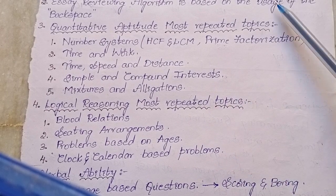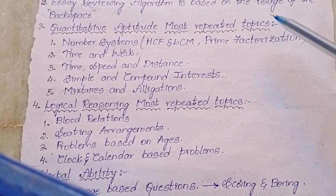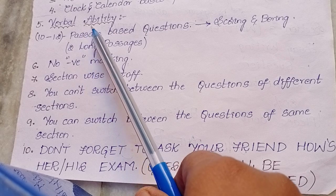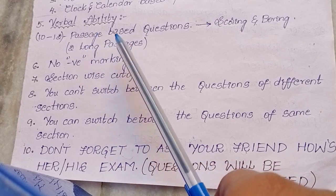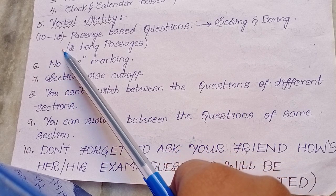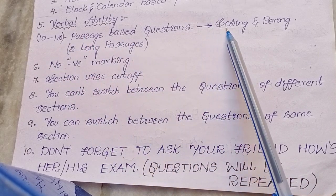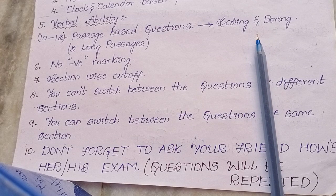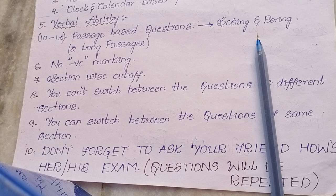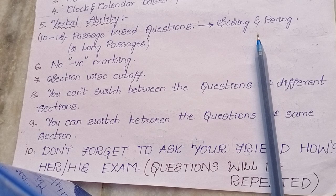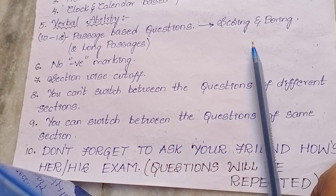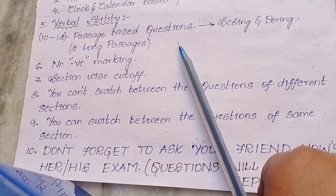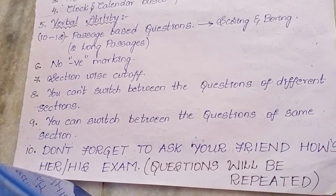Please don't leave any topic if you want to qualify for Wipro. When it comes to verbal ability, you'll get two long passages and from that you'll be asked around 10 to 12 questions. The passages are both scoring and boring, so you need to pay attention to this section. Please start reading RCs — reading comprehensions — and practice lots of passages and answering the questions. This is the most scoring section; if you get all these questions correct, you will definitely qualify the round.